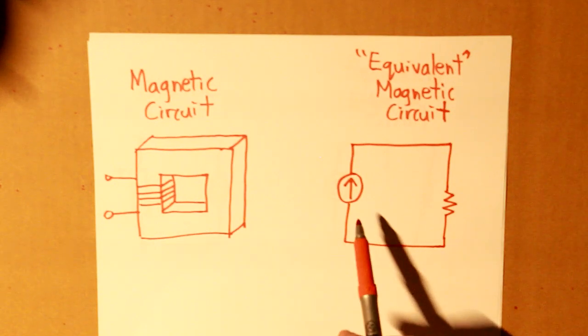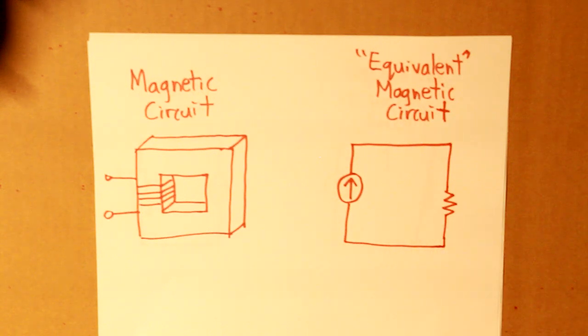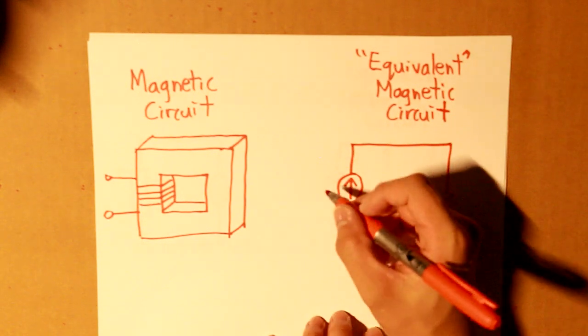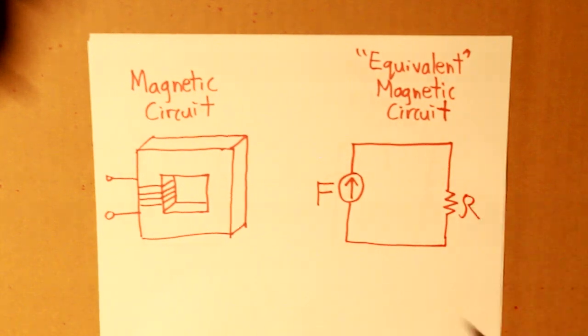This time, it's not a voltage source and it's not a resistor symbol either. So what is it? Well, these terms are called F and cursive R.